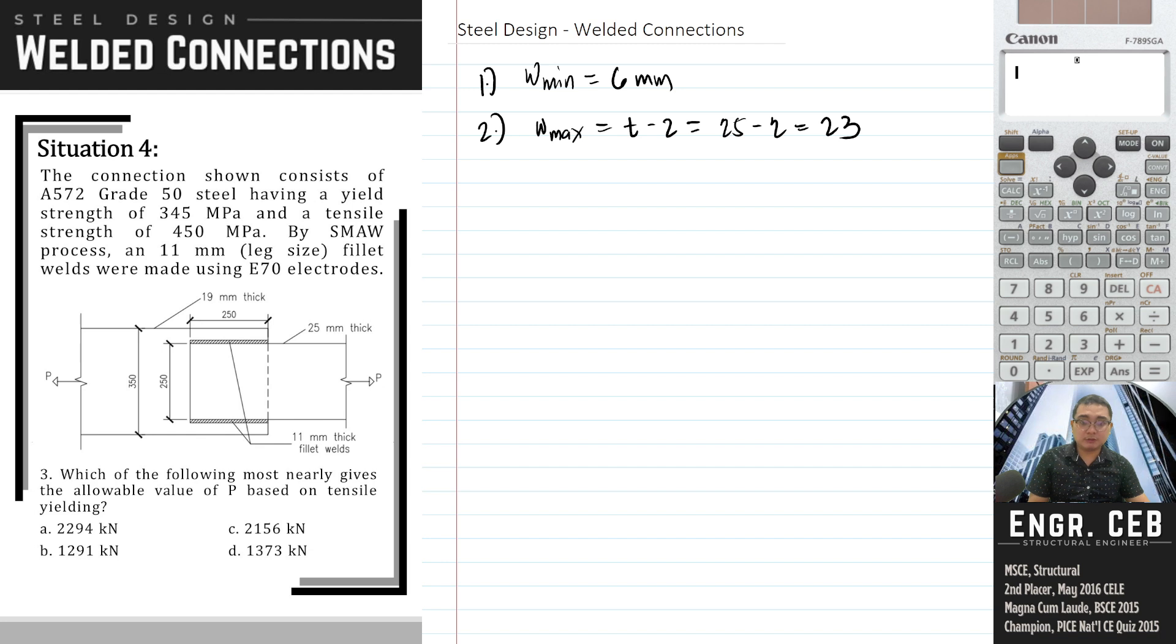Which of the following most nearly gives the allowable value of P based on tensile yielding? As you can see, the dimensions of both members are given, so we need to investigate both. Let's start with the 250 by 25mm thick plate.